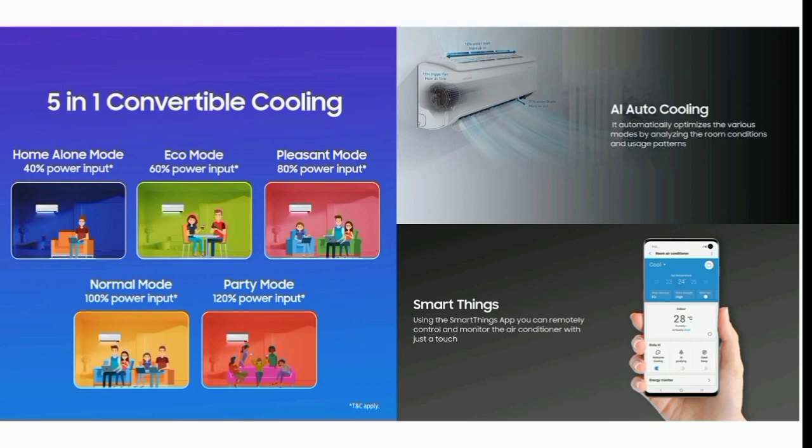The first option is Home. If you choose the home option, you can use the same cooling. The ASE runs at 40% and the remaining 60% is saving.